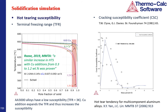However, adding copper may sharply increase the terminal freezing range and thus the hot cracking susceptibility, as evidenced by experimental data. Except for the simple concept of terminal freezing range, we can also use a more advanced model which evaluates the so-called cracking susceptibility coefficient. The plot on the right-hand side reproduces the evaluation of many multi-component aluminum alloys found in the literature.